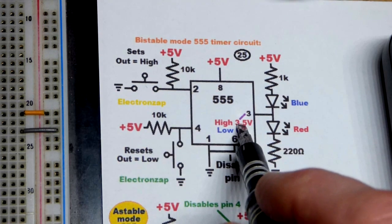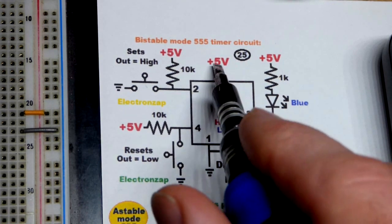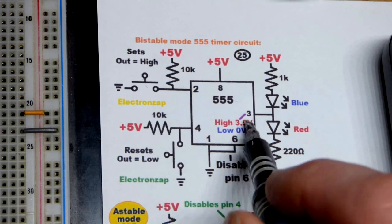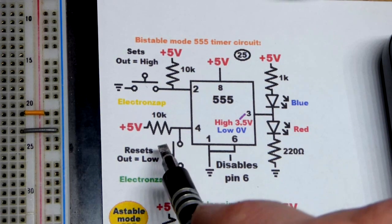It sets the output high which is actually about 3.5 volts if you're using 5 volts because it loses about a volt and a half. But the red LED will light up as you can see there.